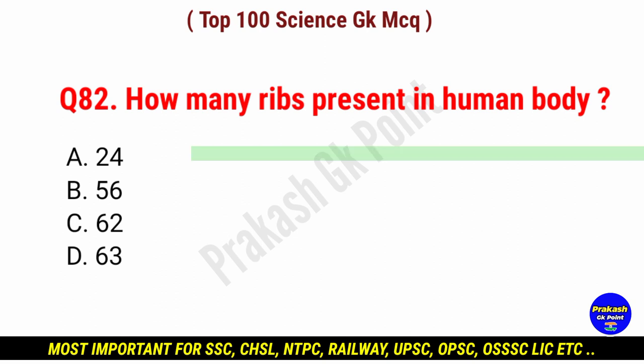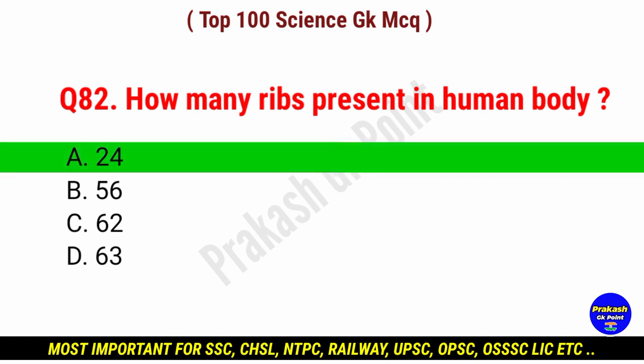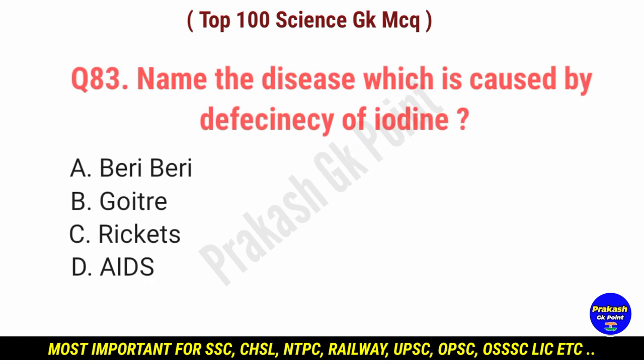How many ribs are present in human body? Answer: option A, 24 ribs.